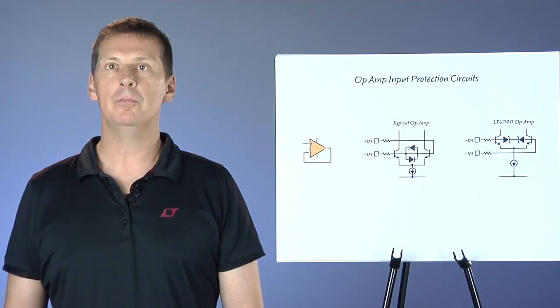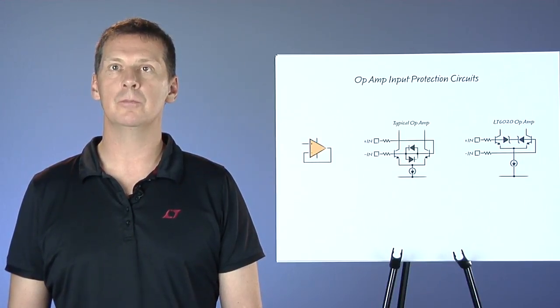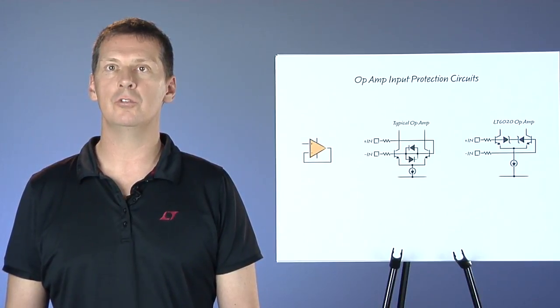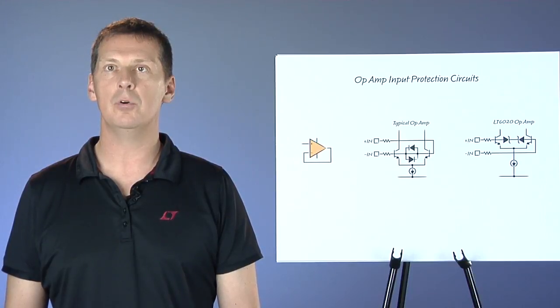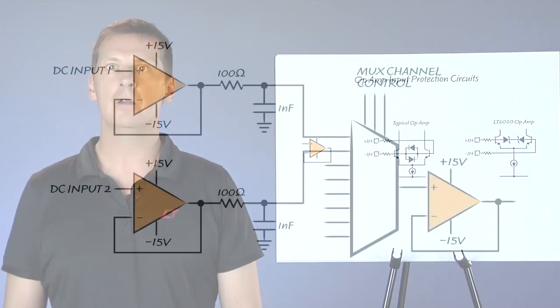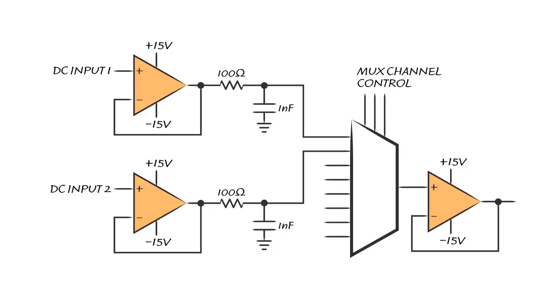Even if the op-amp after the multiplexer is fast enough, there is a separate issue which is not discussed as often. Most precision op-amps have internal protection diodes across the input stage, to avoid reverse biasing the sensitive bipolar transistors at the input stage. When the multiplexer switches from one channel to the next, the input voltage at one terminal changes quickly, even when the output, and therefore the feedback node, doesn't change yet. This causes a large current spike to flow through the internal protection diodes.